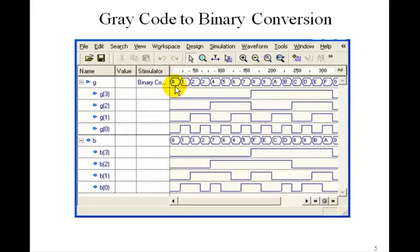If you simulate that with the gray code going from 0 to F, you see that in fact you get the corresponding binary numbers. You can verify that this simulation produces the correct result.